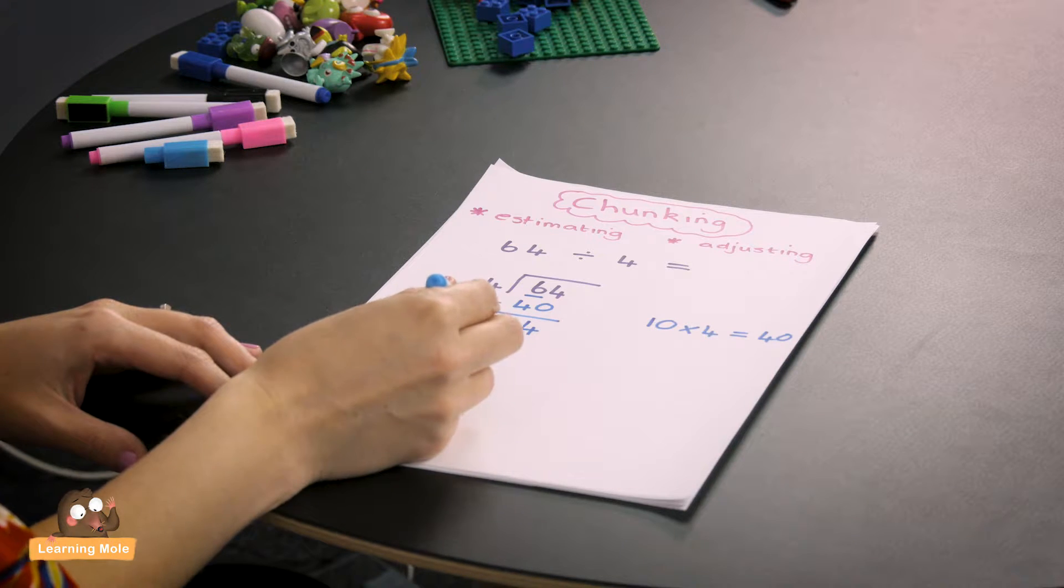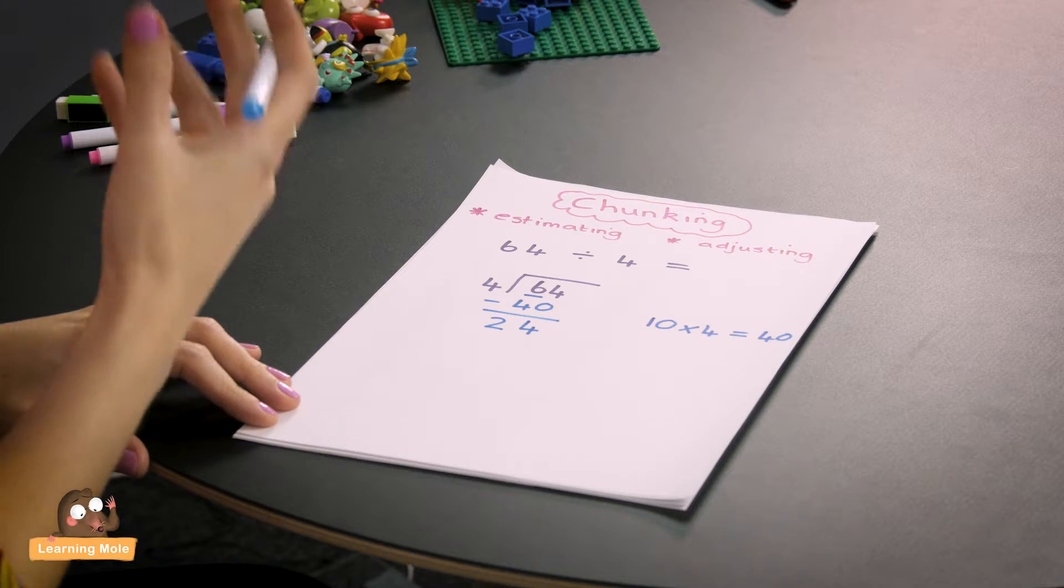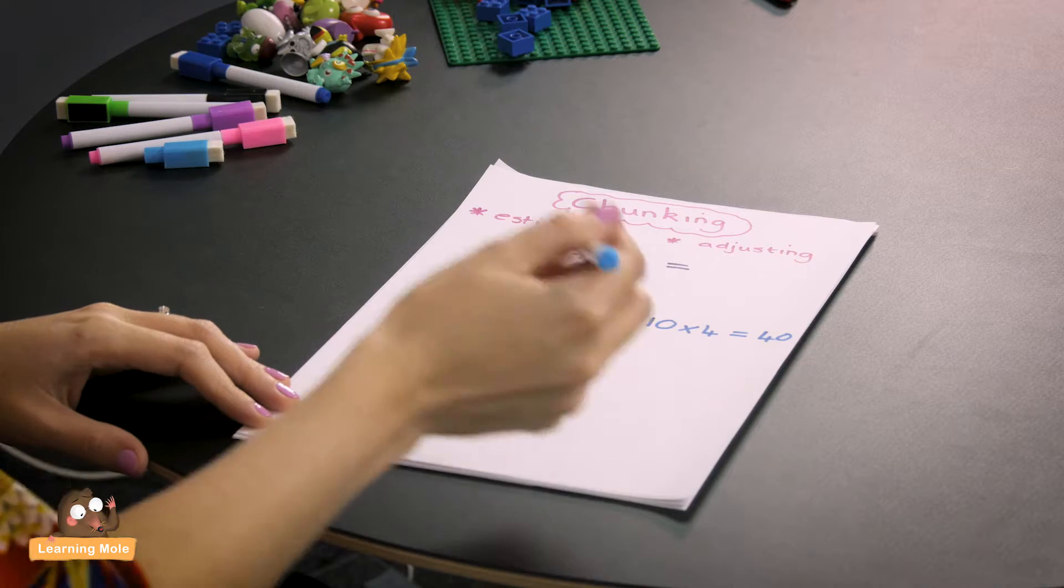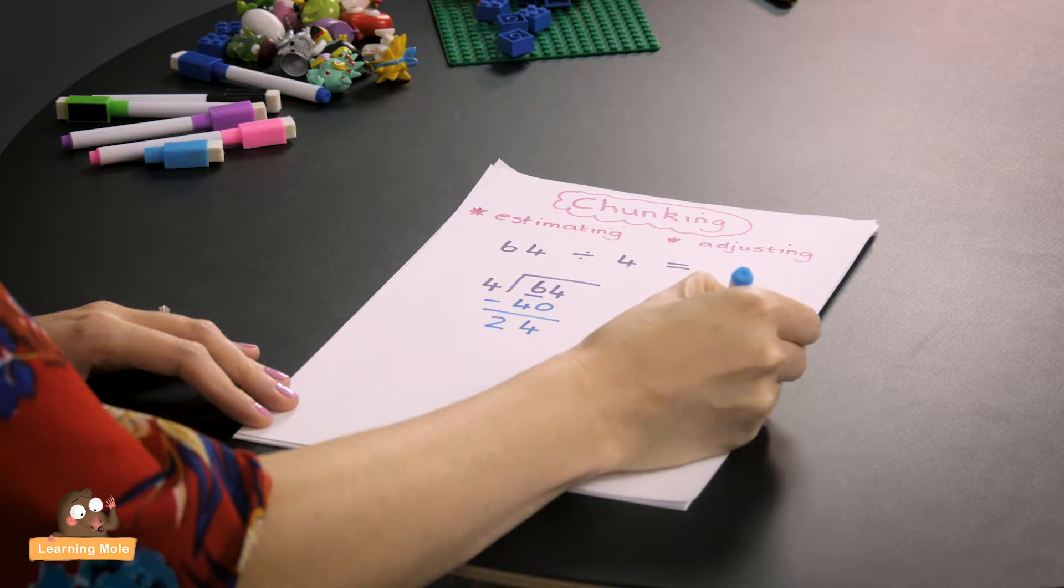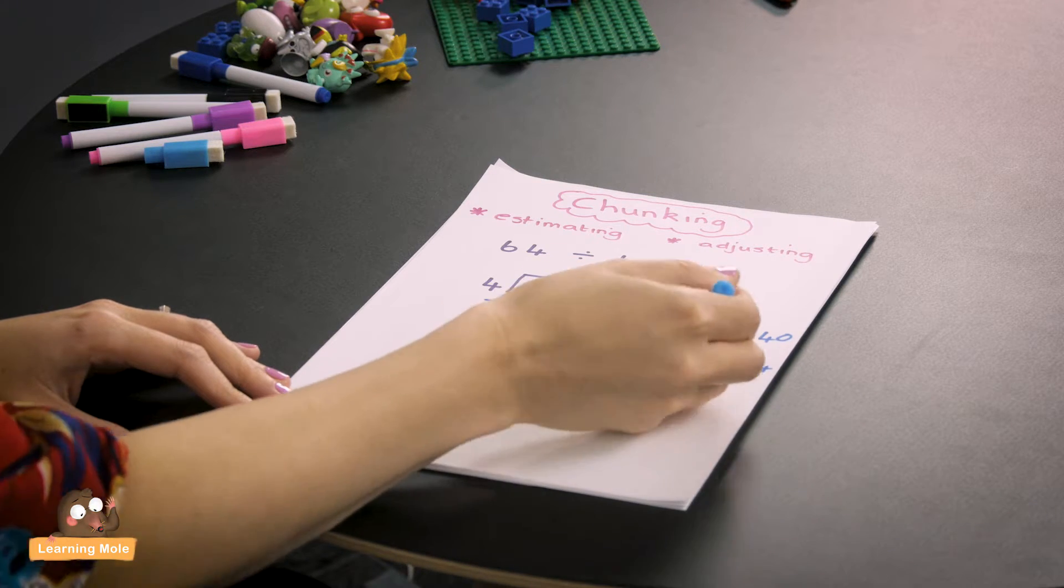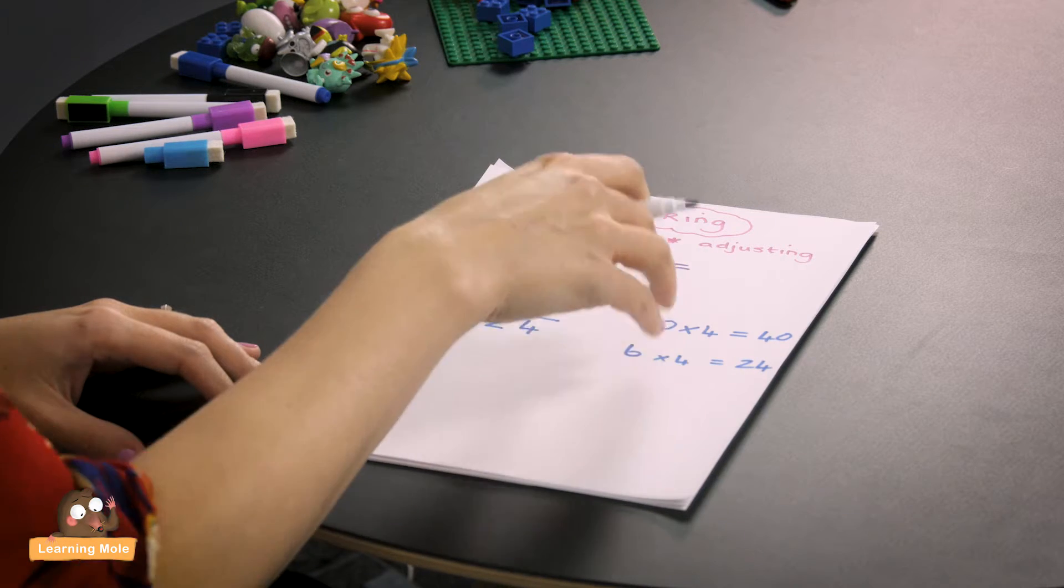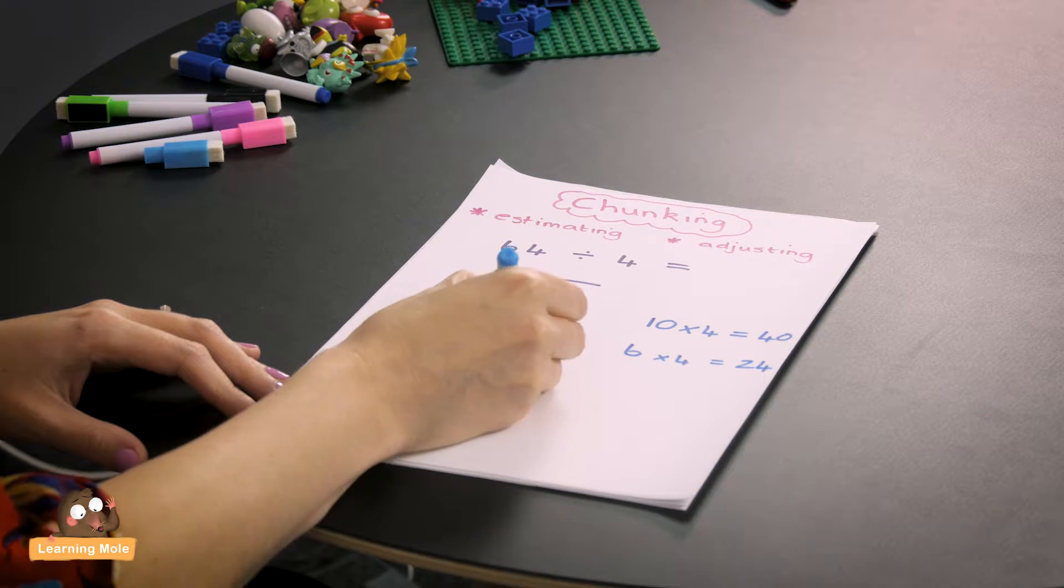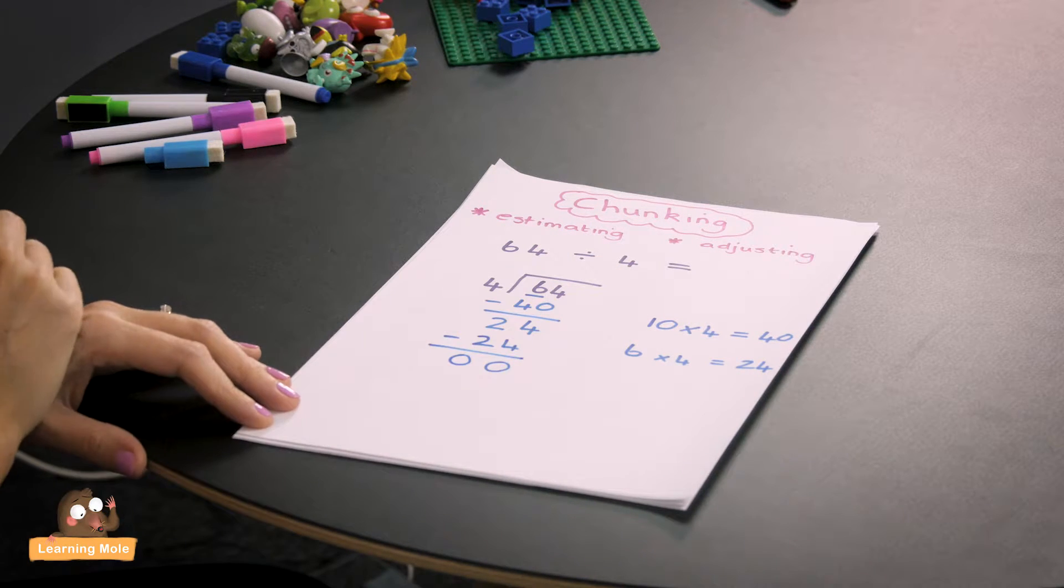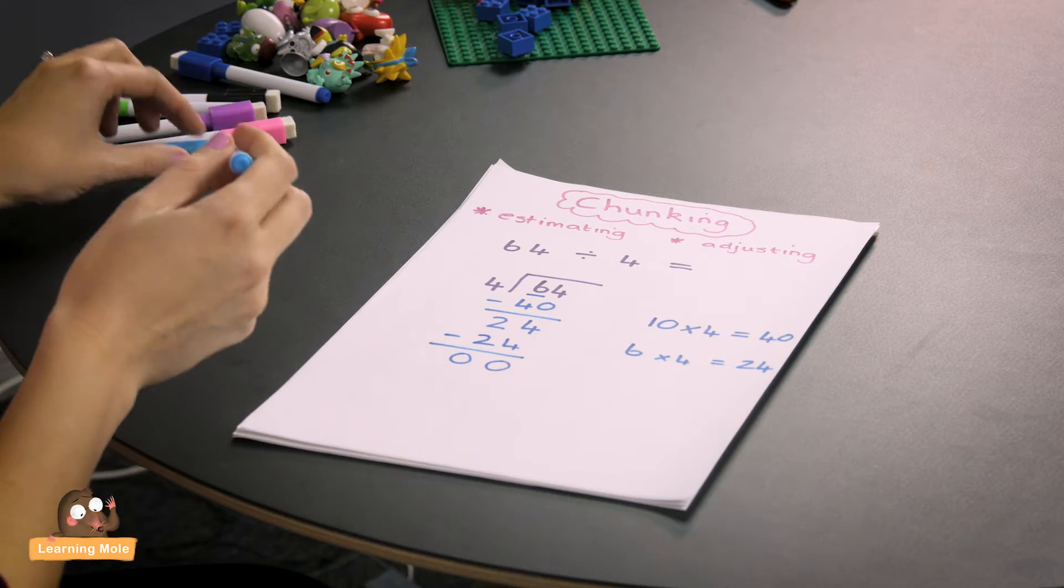Now you want to think about how many times can 4 go into 24? Is there a times table with 24 as an answer? And of course yes there is, it's 6 times 4 equals 24. It's really important that you encourage your child to write down these calculations on the side because this is how they can actually go back and see their answer. Then you're going to do 24 take away 24, and of course your answer is 0, which means you have completely divided your number.